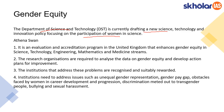In relation to this, a program from the UK has relevance — that is Athena SWAN. It is an evaluation and accreditation program of the UK that aims to enhance gender equity in the STEM field — that is Science, Technology, Engineering, Mathematics and Medicine streams. Research organizations are required to analyze data on gender equity and develop actions for improvement. The broad issues they address include unequal gender representation, gender pay gap, obstacles women face in career development, discrimination for transgender people, and sexual harassment.